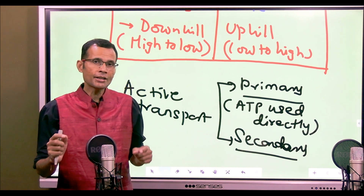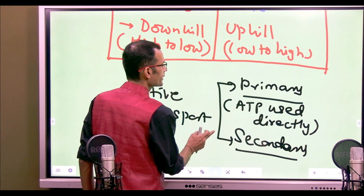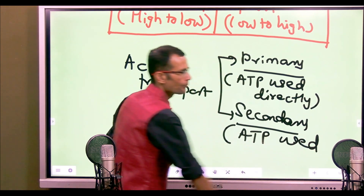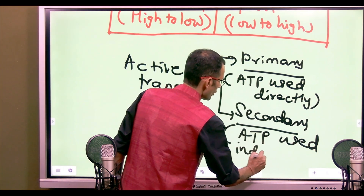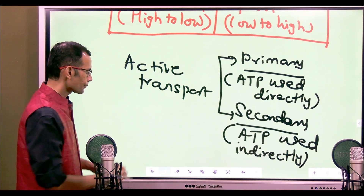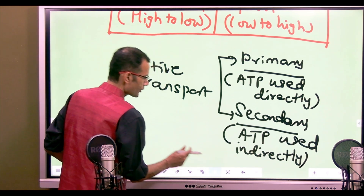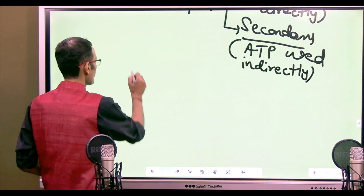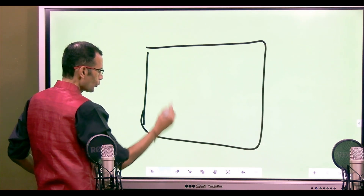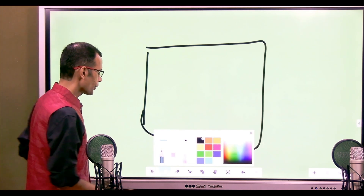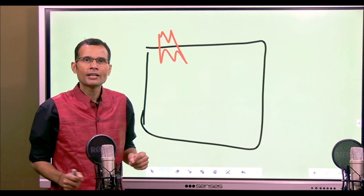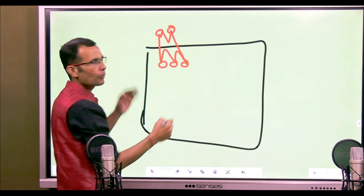Secondary active transport is when ATP use is indirect — ATP is used indirectly. To understand what we mean by indirect use of ATP, let's draw a typical cell and its membrane. The cell has a primary active transporter like the sodium-potassium pump, which is the most common one present everywhere.